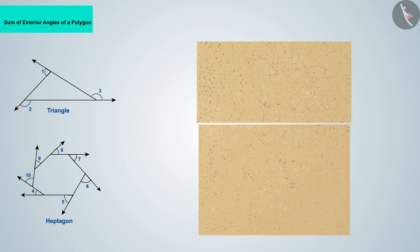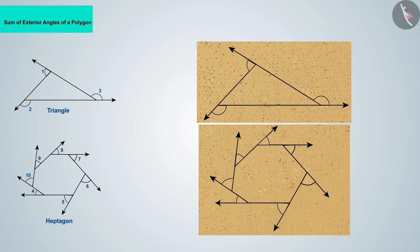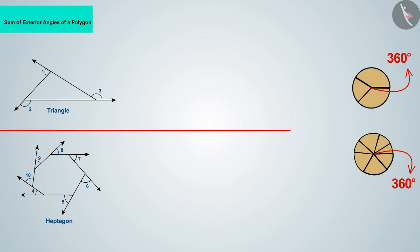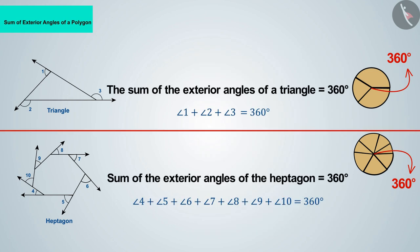If we place these figures on a piece of cardboard by cutting their external angles in this way, we can see that they also represent a circle like a hexagon. On the basis of which we can say that the sum of the external angles of these two figures is also 360 degrees.